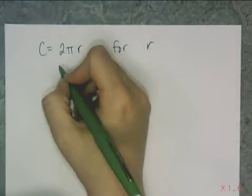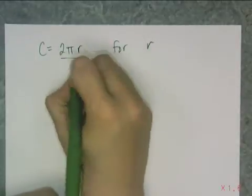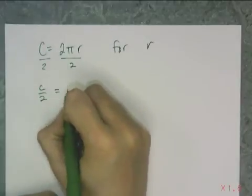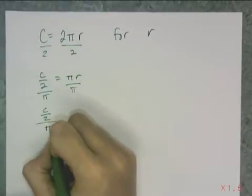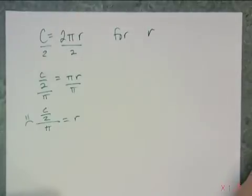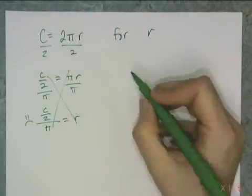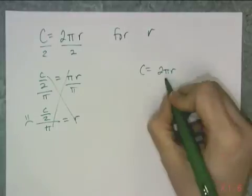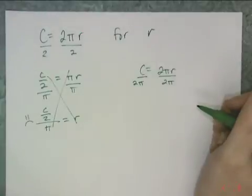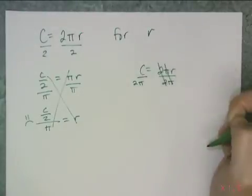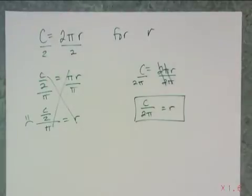I could get rid of the 2π piecewise — first dividing by 2 to get c over 2 equals πr, and then dividing both sides by π to get c over 2 over π equals r. But that gives a fraction in a fraction, which is a big frowny face. Instead, I divide off the 2π in a single step, and I'm left with c over 2π equals r. That's preferred because it's just a plain old fraction.